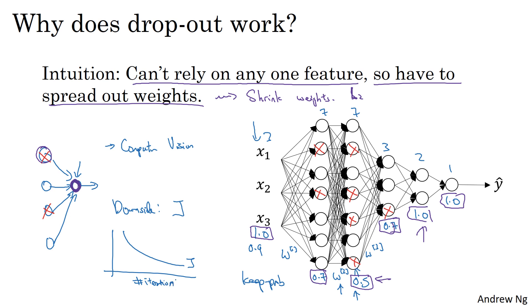Because the cost function J that you're optimizing is actually less well-defined, or is certainly hard to calculate. So you lose this debugging tool to be able to plot a graph like this.